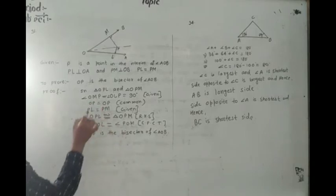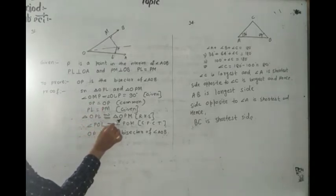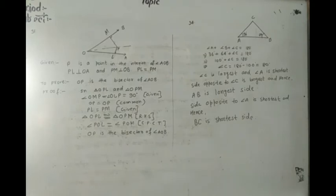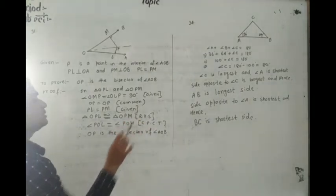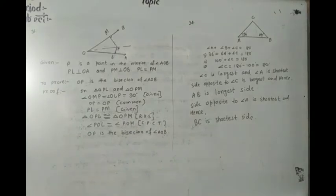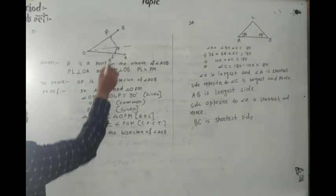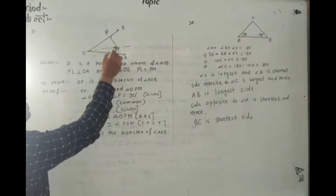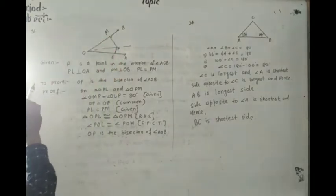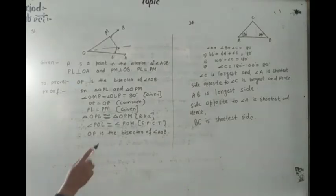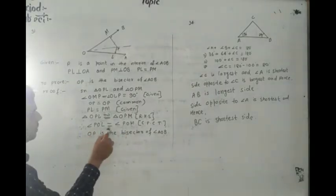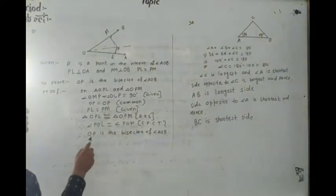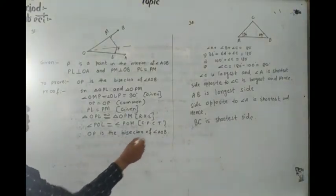Both triangles OPL congruent to triangle OPM by using RHS (right angle, hypotenuse, side) criteria for congruency. Then angle POL equal to angle POM because if two triangles are congruent, then all corresponding parts are equal by CPCT. Therefore, OP is the bisector of angle AOB.